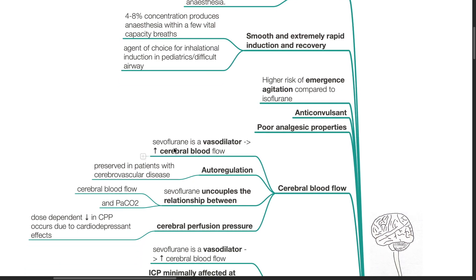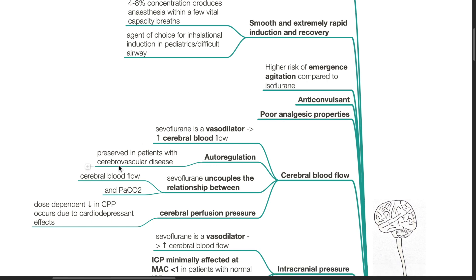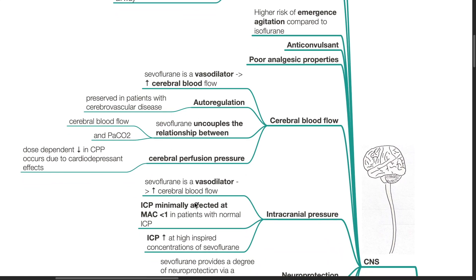Sevoflurane is a vasodilator and increases cerebral blood flow. Autoregulation of cerebral blood flow is preserved in patients with cerebrovascular disease. Sevoflurane uncouples the relationship between cerebral blood flow and PaCO2. There is a dose-dependent decrease in cerebral perfusion pressure due to the cardio-depressant effects of Sevoflurane. Effects on intracranial pressure: Sevoflurane is a vasodilator that increases cerebral blood flow.